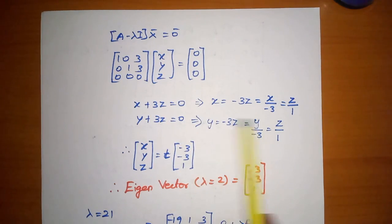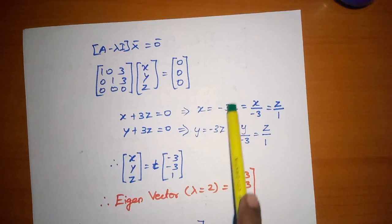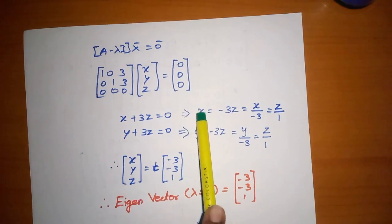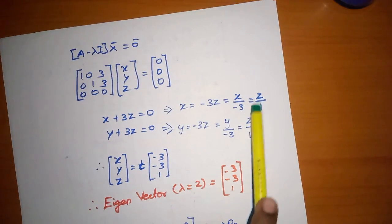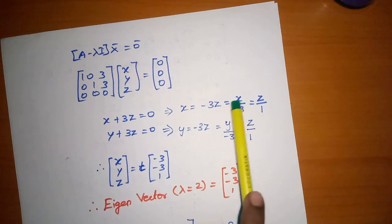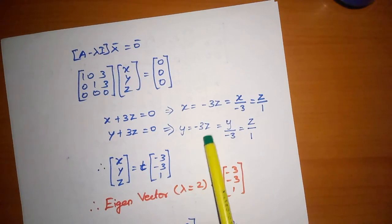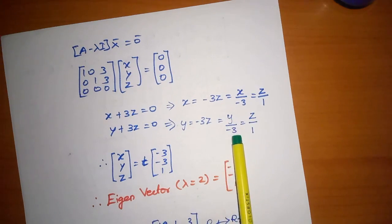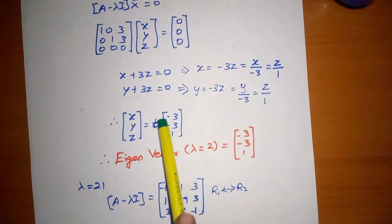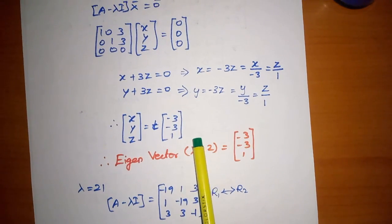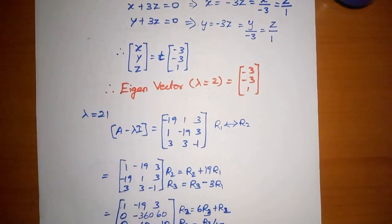From x plus 3z equals zero, x equals minus 3z. Using the coefficient denominator method: x divided by minus 3 equals z divided by 1, so x equals minus 3 and z equals 1. Similarly y equals minus 3. The eigenvector for lambda equals 2 is t times [minus 3, minus 3, 1].